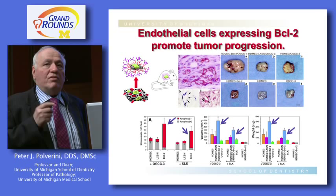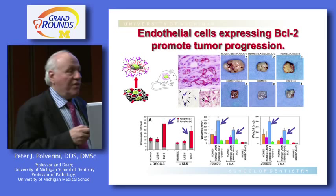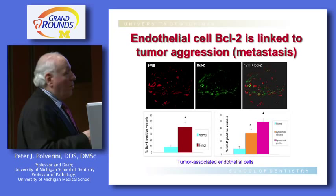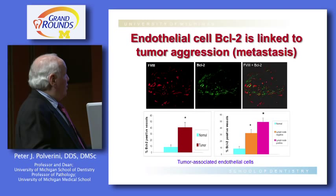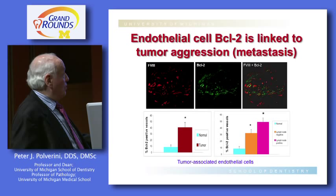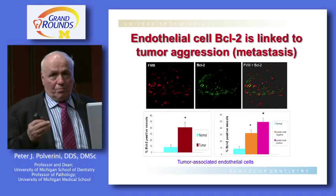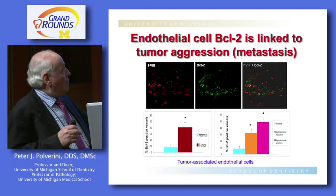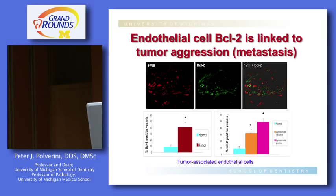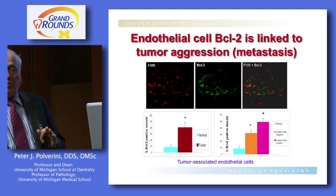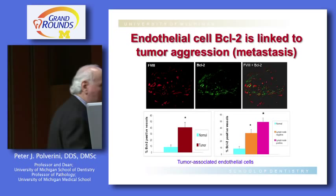BCL2 can help define neoplastic potential. The percentage of endothelial cells expressing this survival protein is higher in normal tissue around metastatic lymph nodes compared to non-metastatic nodes, suggesting that tumors can activate endothelial cells at distant sites systemically. Lymph nodes containing tumors show even higher rates of BCL2 expression in endothelial cells. This gives endothelial cells a distinct survival advantage, enabling them to sustain tumor growth for a much longer period of time.